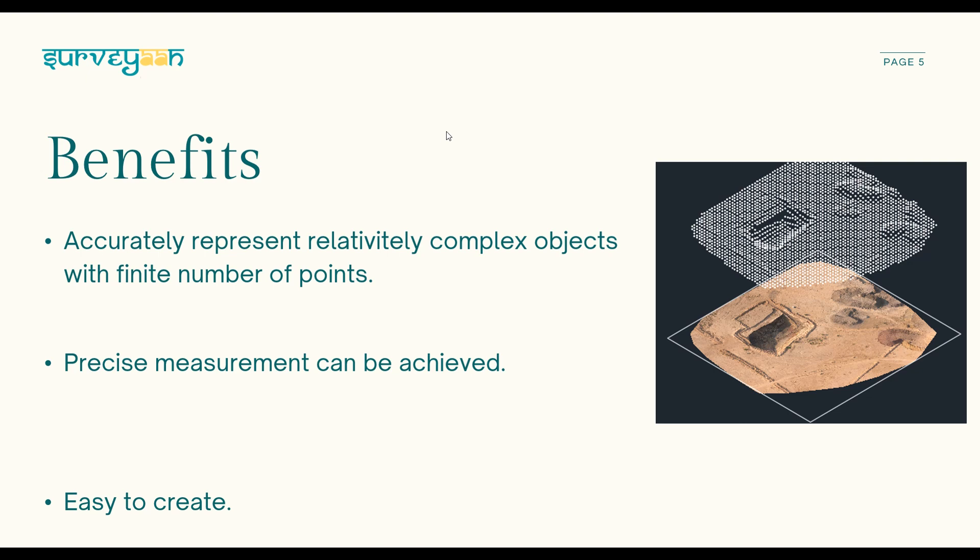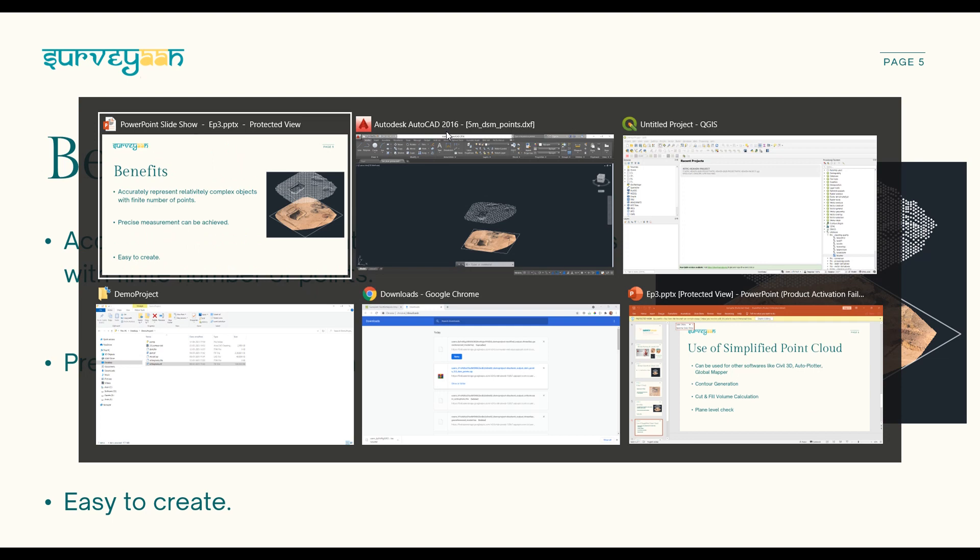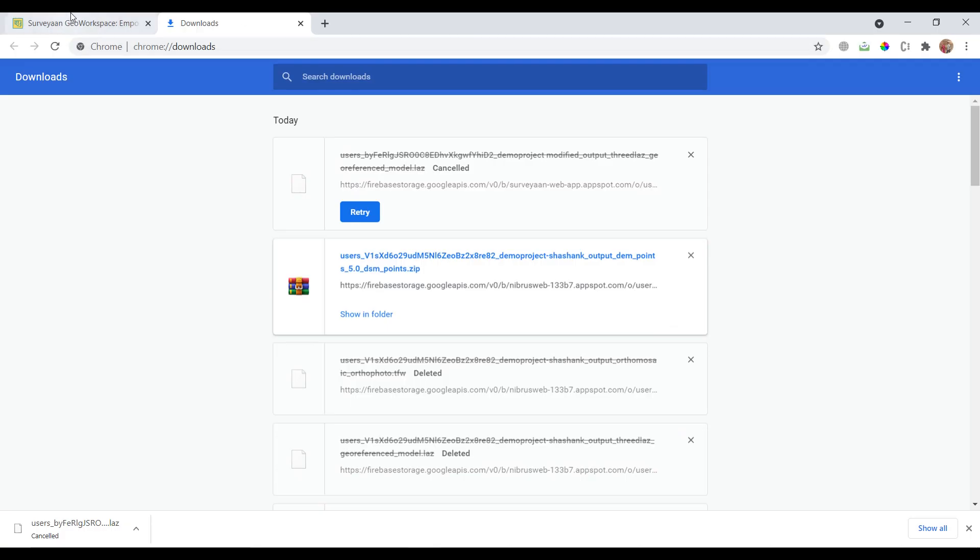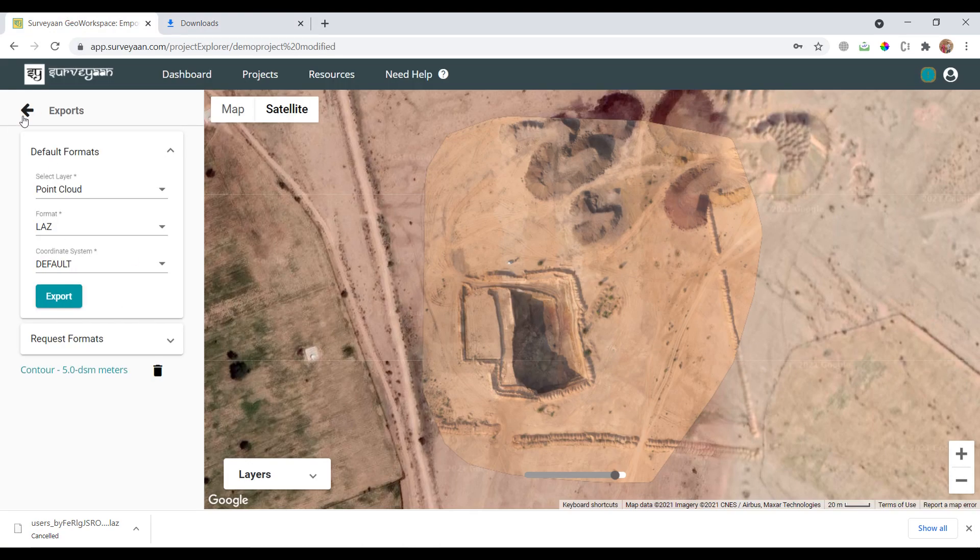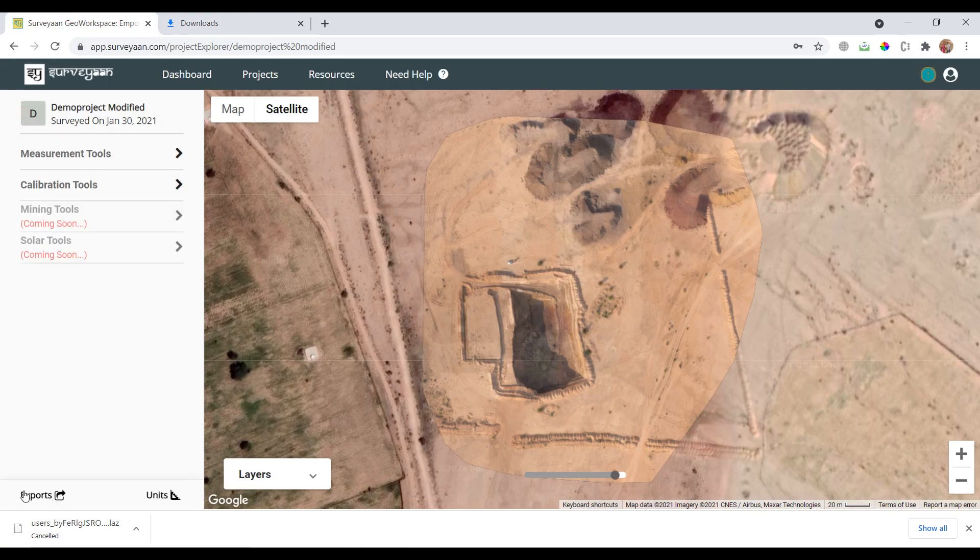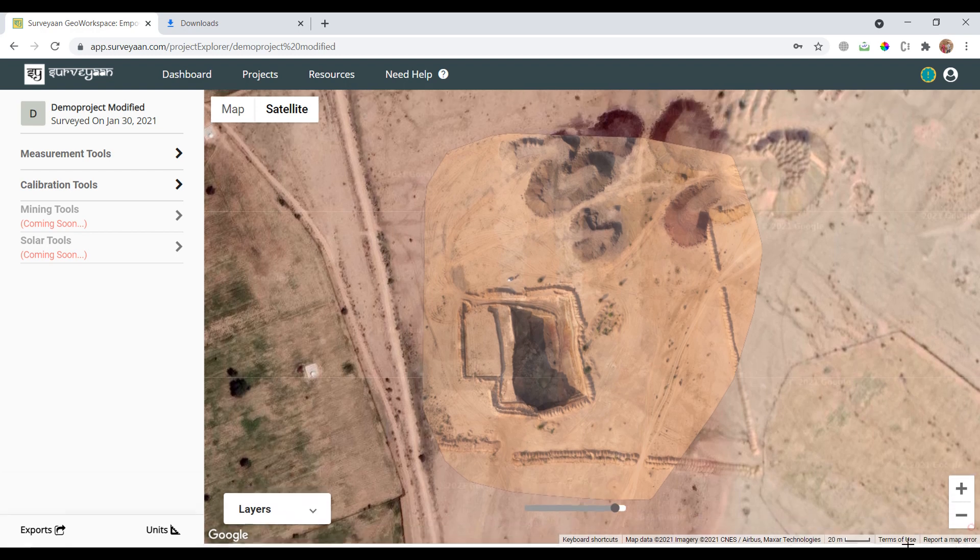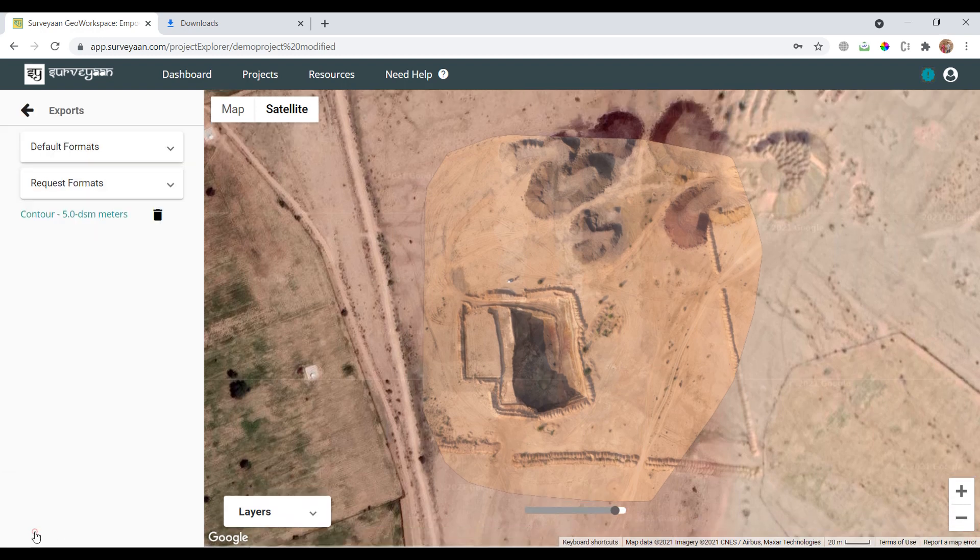I have downloaded the point cloud of the project using Survey On Geo Workspace. You can also do it by going to the export section, select point cloud as layer, and click on the export button.